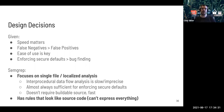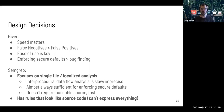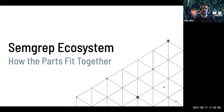Given these design decisions, what choices do we make? We focus on single-file and localized analysis. Interprocedural data flow tends to be more slow and imprecise, and is generally not required for enforcing secure defaults — and it doesn't require buildable source code. We are considering building more advanced cross-file analysis, but that's not the focus right now. And we have rules that look like source code, which makes them very easy to write, but can be not quite as Turing complete as a full programming language.